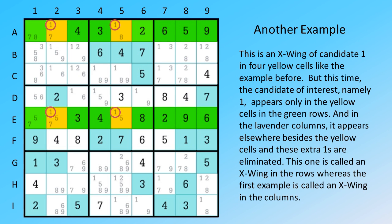And in the lavender columns, it appears elsewhere besides the yellow cells, and these extra ones are eliminated. This one is called an X-Wing in the rows, whereas the first example is called an X-Wing in the columns.